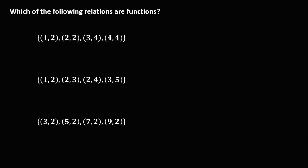We have a given set, and we need to identify which of the following relations are functions. A relation is a function if there is no repeated value for x. In a given coordinate, the first number is the value of x. For this relation, the values of x are 1, 2, 3, and 4. Since there is no repeated value for x, this relation is a function.